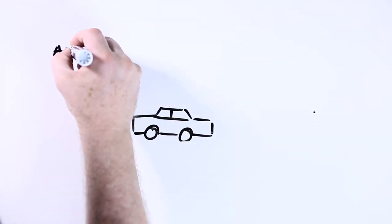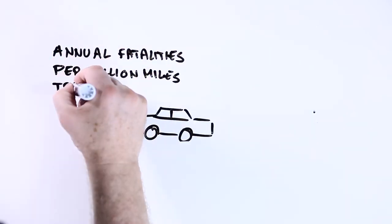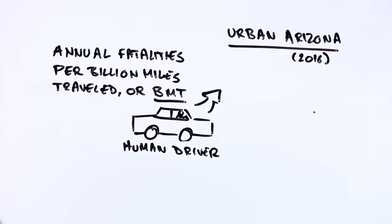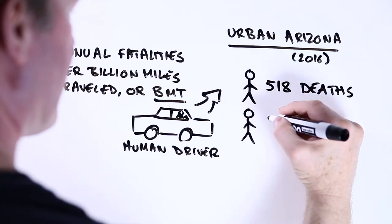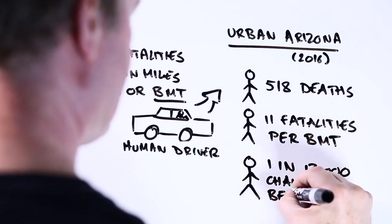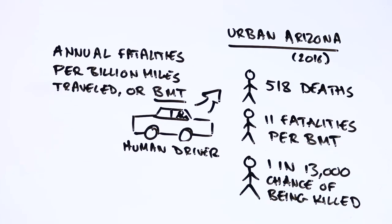One way to approach this is to use the number of fatalities per billion miles travelled. In urban Arizona, there were 518 people killed by cars in 2016, or around 11 people killed per year for every billion miles travelled in the state. This is equivalent to around a 1 in 13,000 chance of being killed by a vehicle each year if you live somewhere like Phoenix.